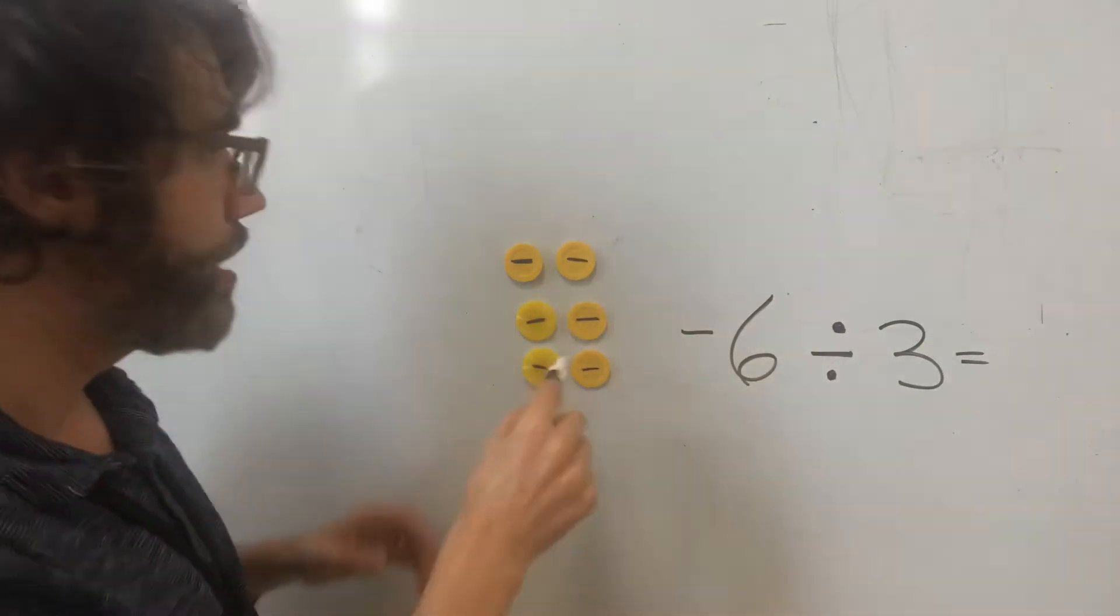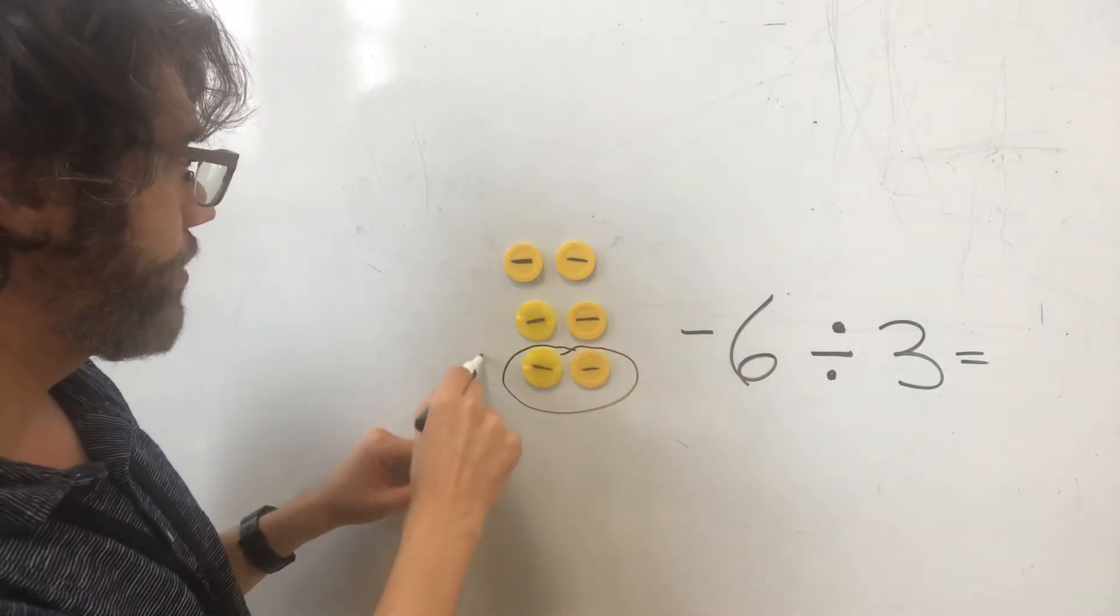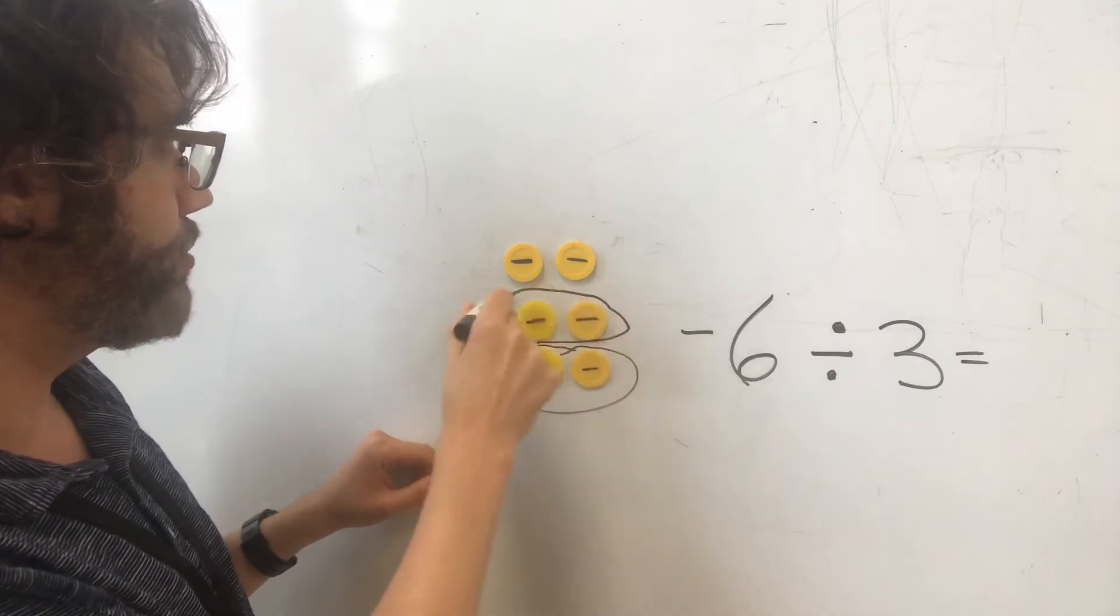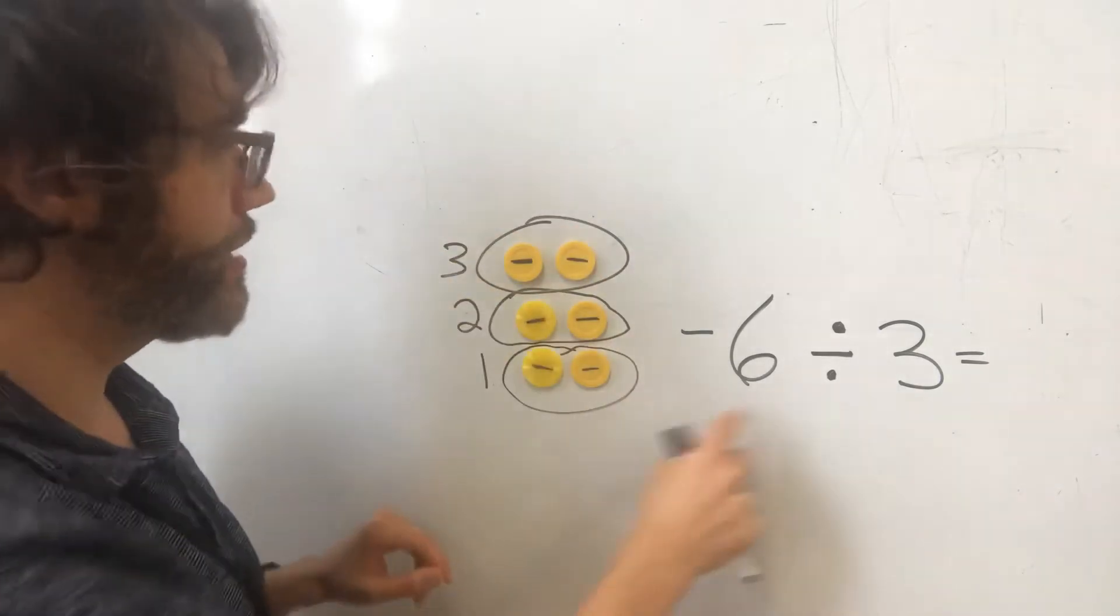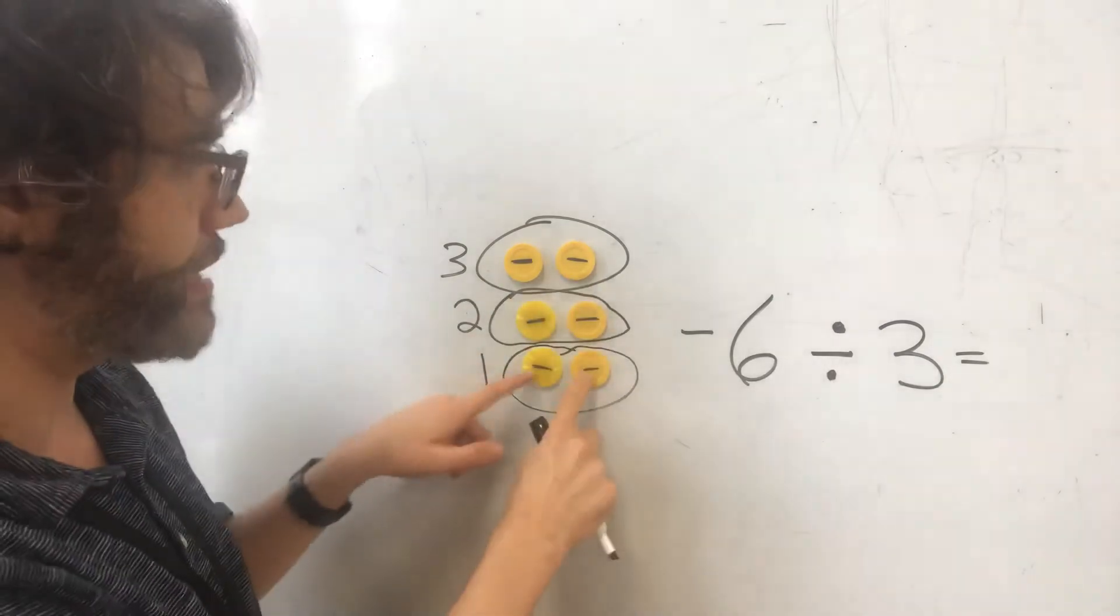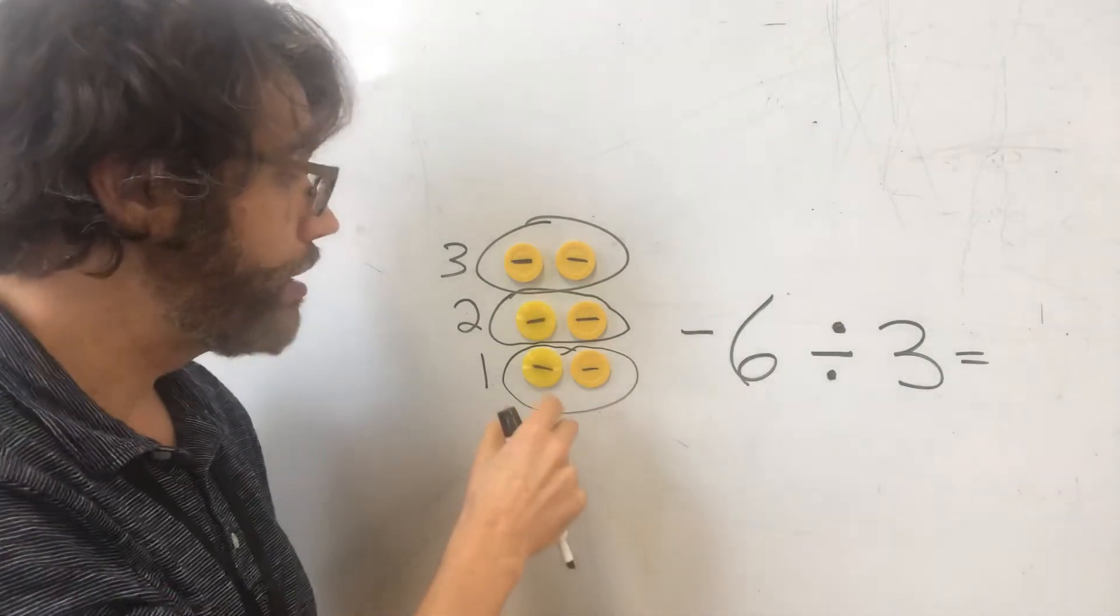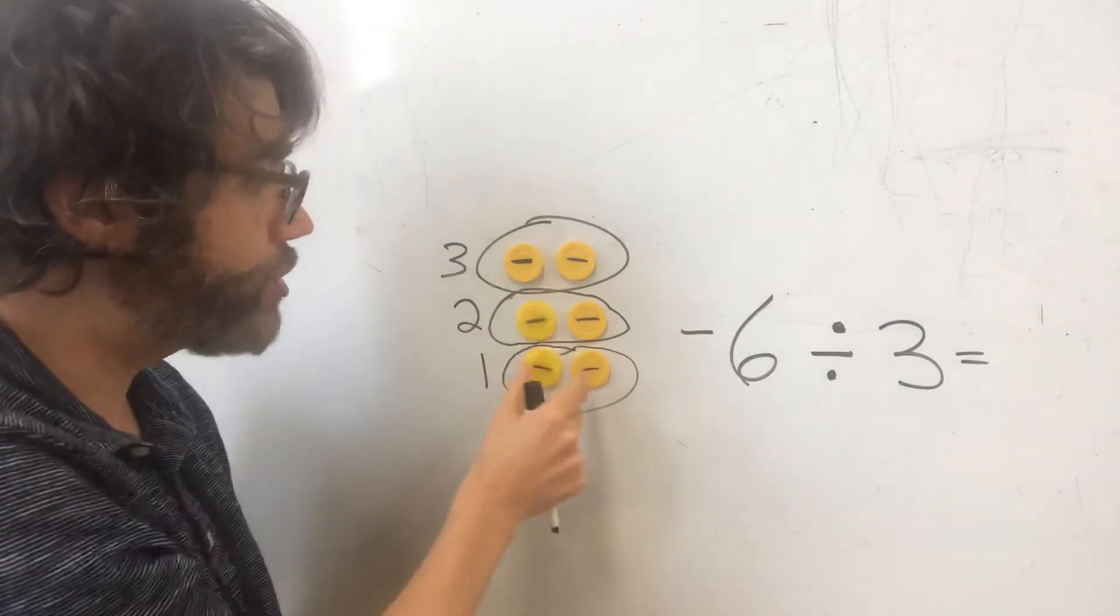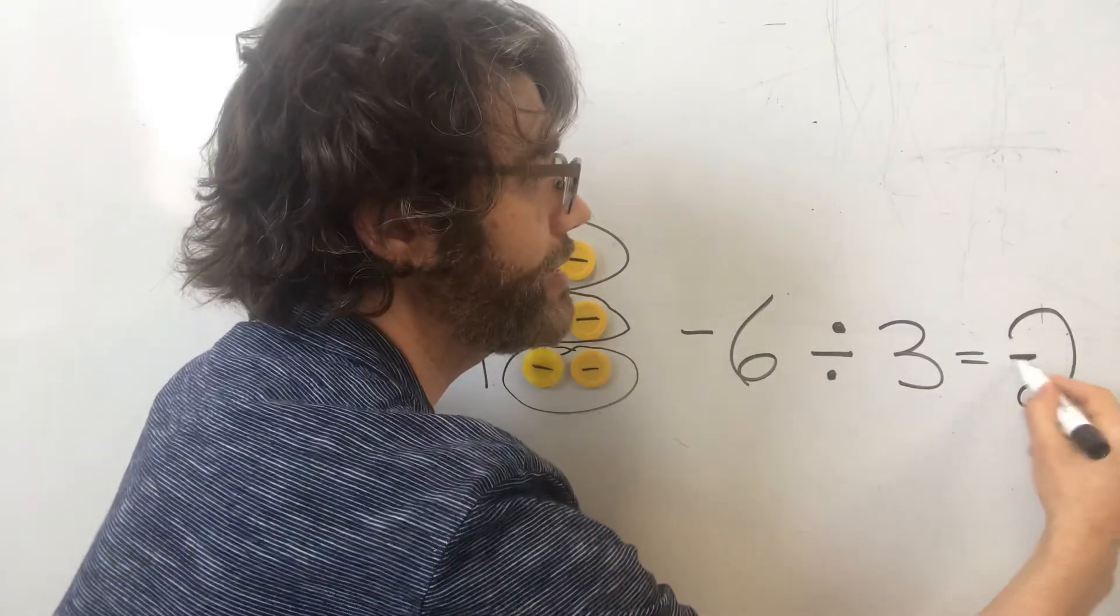Well, let's see. I'm going to divide it into three groups. I could divide it this into this as a group, and then we could do this as a group, second group, and then this as a group. We divided it. We divided it into three different groups evenly. And now let's see how much debt is in each group.